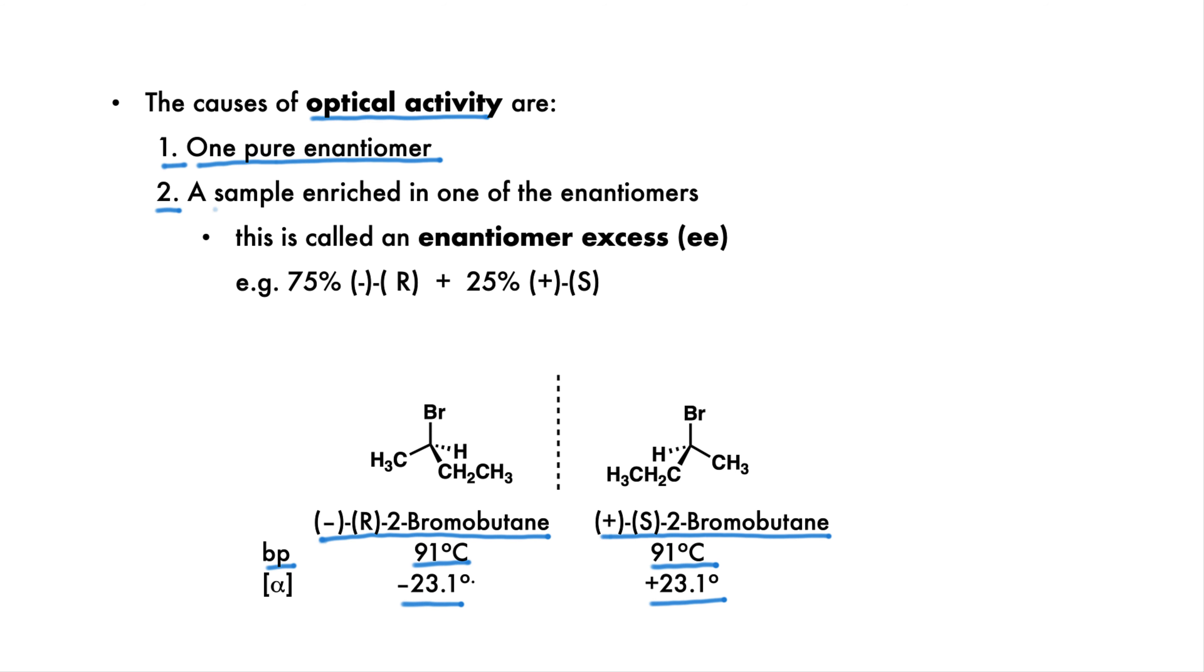The other scenario is that you have a mixture of both enantiomers, but the sample is enriched in one of the enantiomers. We could, for example, have 75% minus R enantiomer and 25% of the plus S enantiomer. We say the sample has an enantiomeric excess, EE for short, of 50% of the minus R enantiomer. And we would expect a net rotation in the negative direction. We could calculate the exact magnitude of the expected rotation of this mixture, but we won't do it here.